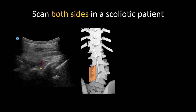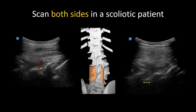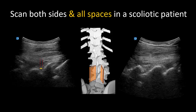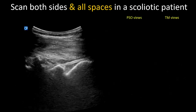A parasagittal oblique scan should be done on both sides of the spine. This will usually reveal narrower spaces on the concave side and wider spaces on the convex side. The width of the space is indicated by the gap between adjacent laminae and also how easy it is to visualize the anterior complex. This gives further clues about the presence of a scoliosis and which way the curves might be going. It is important to assess all the spaces from L2-3 down to L5-S1, as one interlaminar space may be wider than the others.